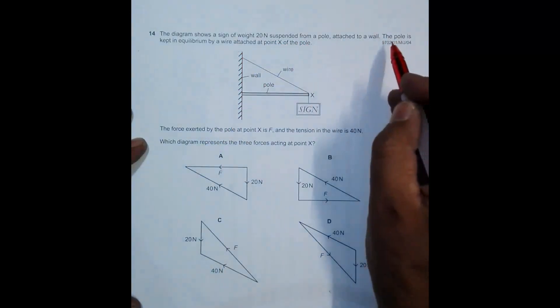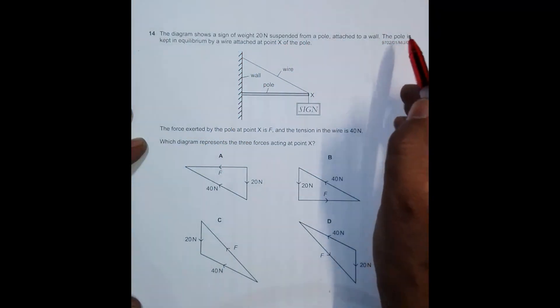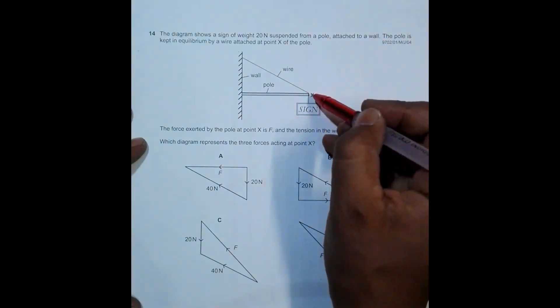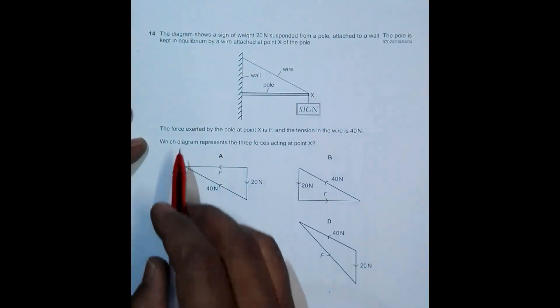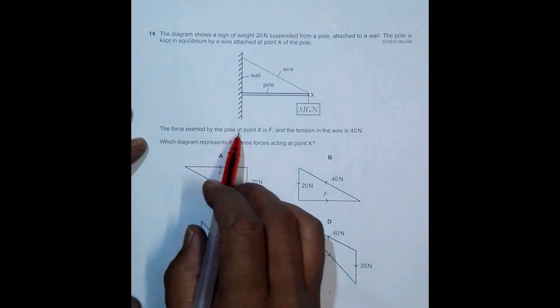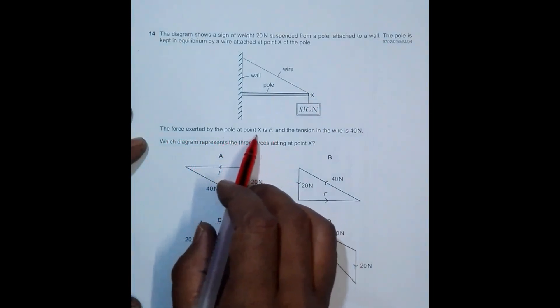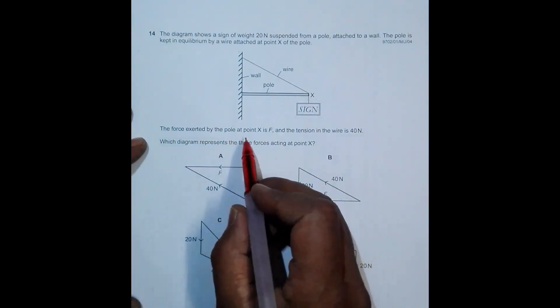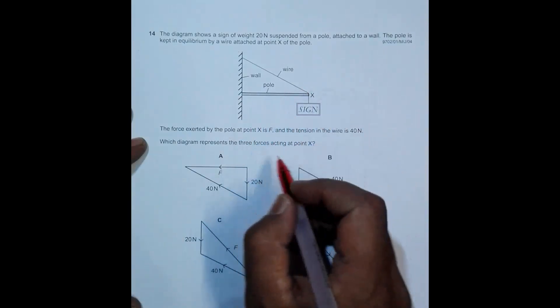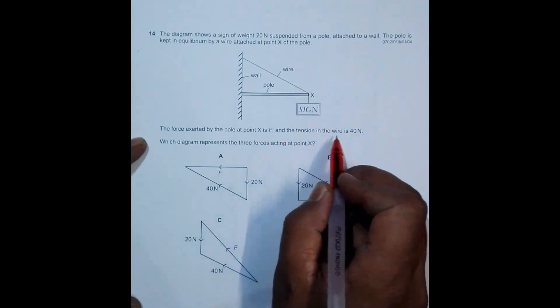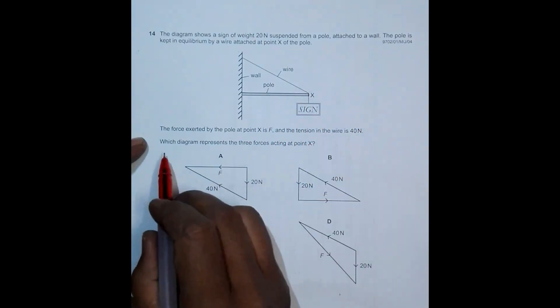The pole is kept in equilibrium by a wire attached at point X of the pole. The force exerted by the pole at point X is F, and the tension in the wire is 4 Newtons.